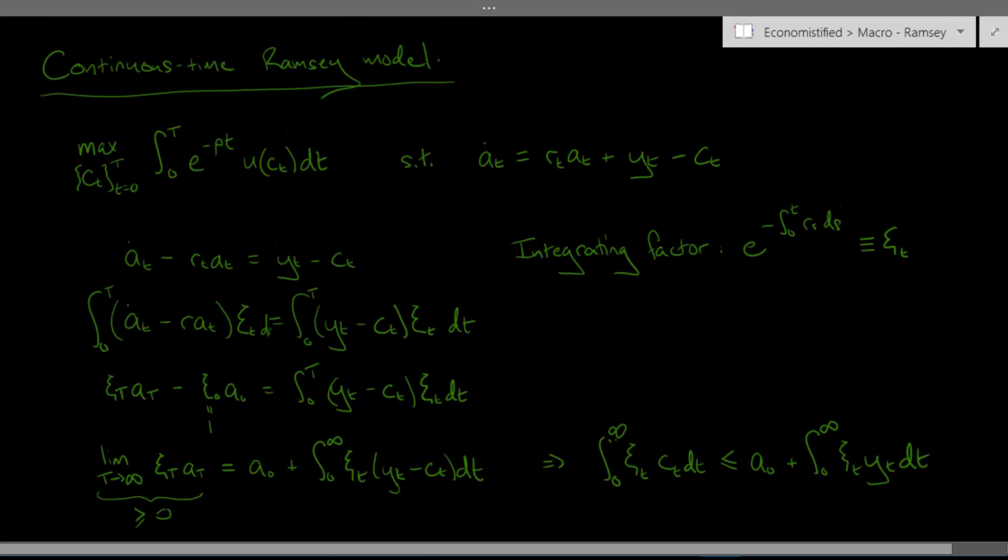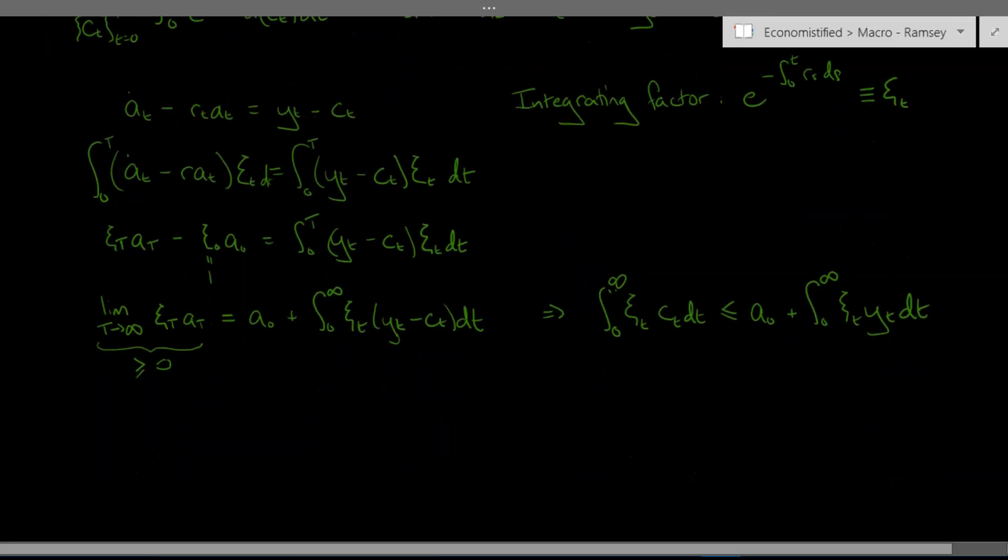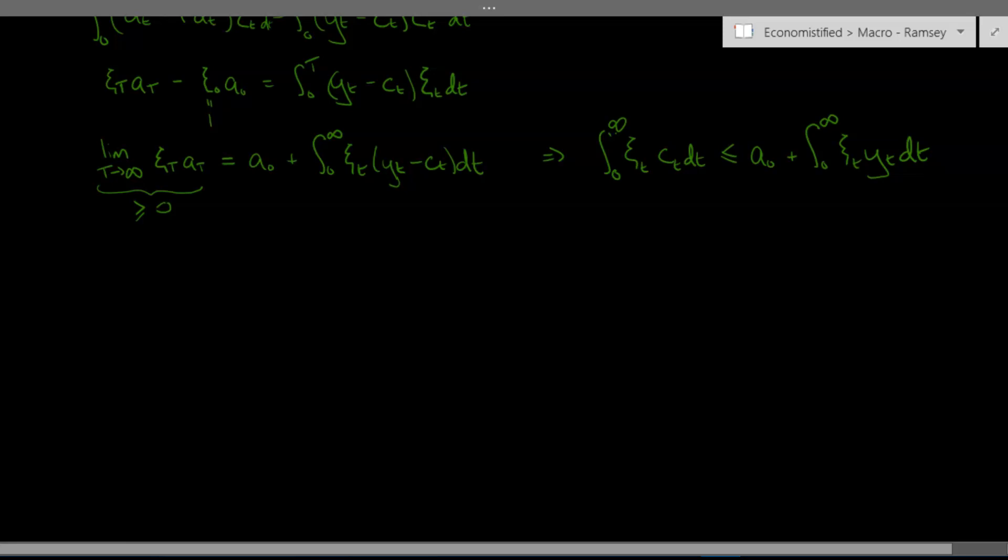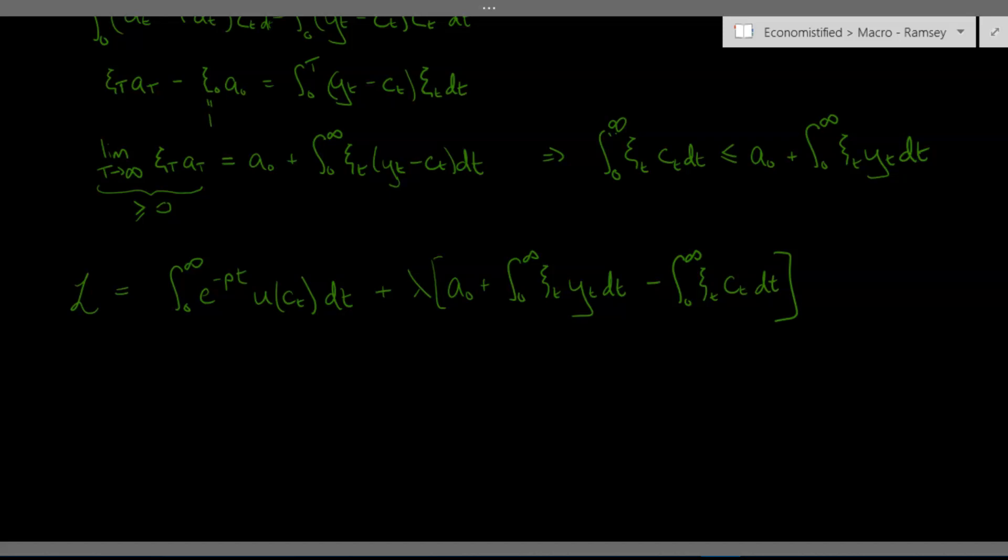Now I'm going to treat this intertemporal budget constraint as an inequality and maximize this objective function up here the discounted lifetime utility subject to this single intertemporal budget constraint. So let me just write the Lagrangian. So this is our Lagrangian and in the next video we're going to set about maximizing this so see you then thanks very much.